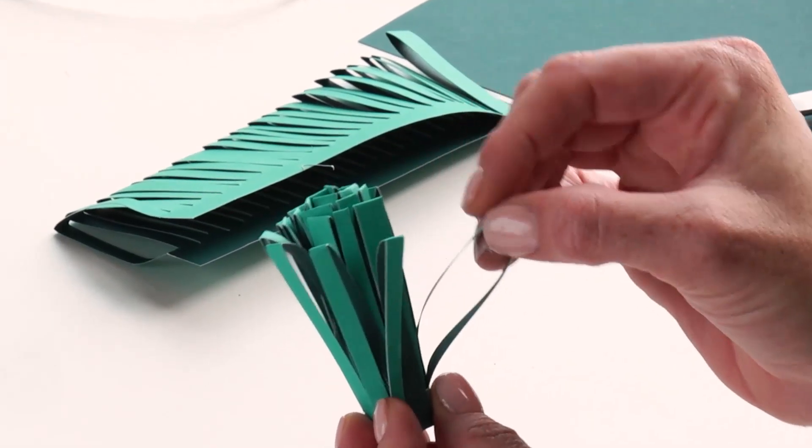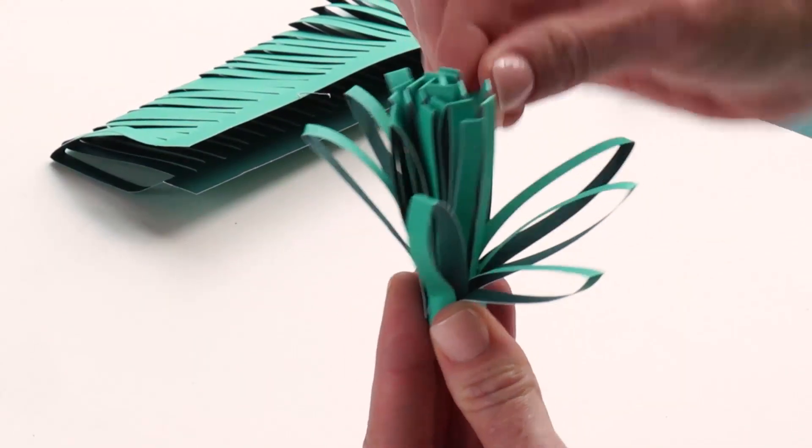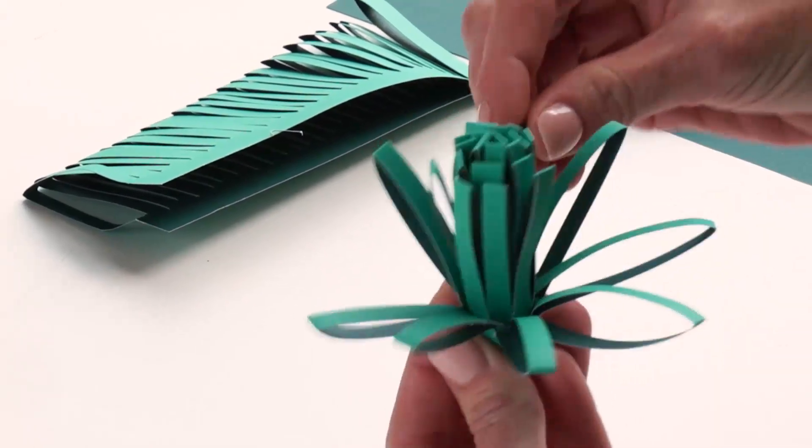What you're going to do is you're going to pull back each petal, if you will, down. This will start to make it open or blossom, and you continue to do that all the way around.